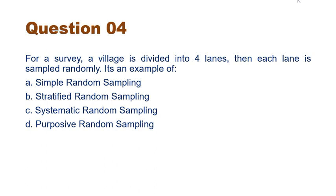Stratified random sampling is when we have pre-specified strata and we do random sampling within each stratum. For example, we make strata like male and female, and among males we do simple random sampling, and among females we do simple random sampling. In systematic random sampling, the starting point is random but the rest of the sampling units are selected as per a pre-specified pattern. Purposive sampling is not random — it is subjective, so option D is absolutely wrong.